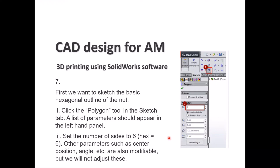In step 7, we want to sketch the basic hexagonal outline of the nut. Click on the polygon icon and a prompt will appear with a list of parameters on the left-hand panel. Set the number of sides for your hex — make it 6. Other parameters like the angle and center position need to be set as well based on the dimensions you have in mind, but for now we will keep them as they are.